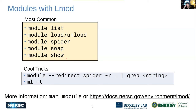Commonly used module commands on Perlmutter include `module swap`, which still works, and `module show`, which I find really useful — it tells you what's happening when you load a module. One cool trick is to pipe `module spider` output to grep using the `--redirect` flag and the `-r` flag for regular expression search, using a dot to match everything. This lets you search the entire module system and filter with grep for the string you want. For more information, look up the Lmod environment documentation.